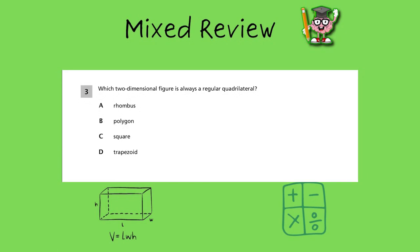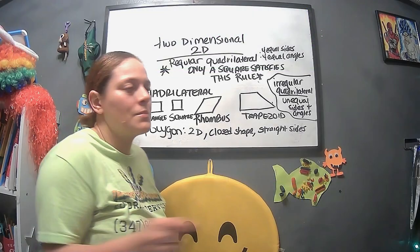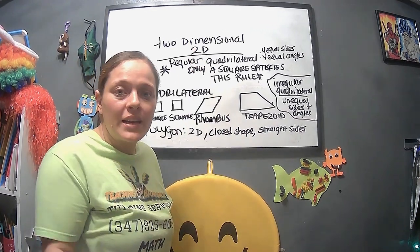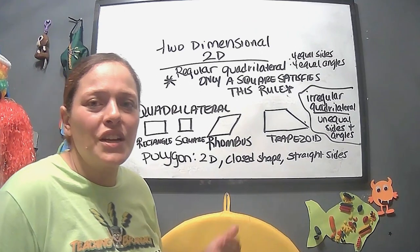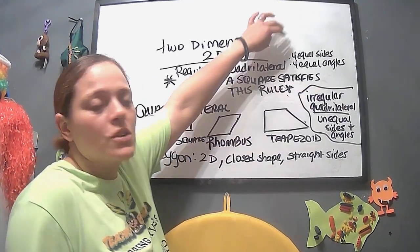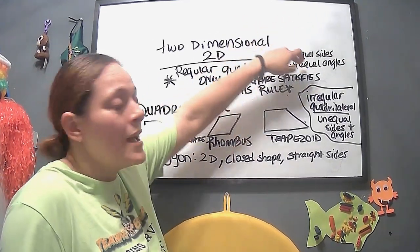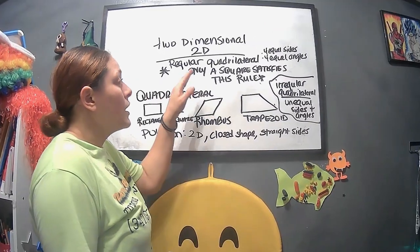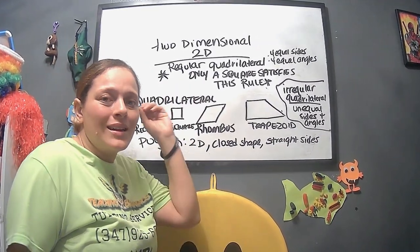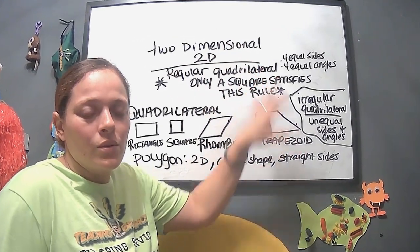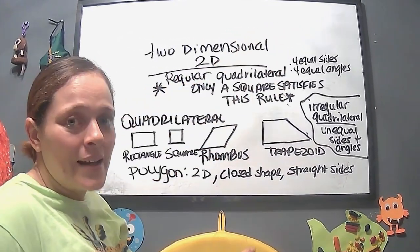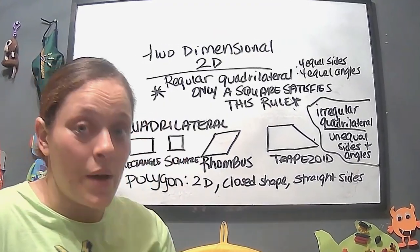Which two-dimensional figure is always a regular quadrilateral? Two-dimensional is nothing but 2D. When they say regular quadrilateral, they're pretty much talking about the equal side and the equal angles. A square is the only one that specifically satisfies the rule of being a regular quadrilateral. So just from this definition alone, the answer we already know is going to be square.